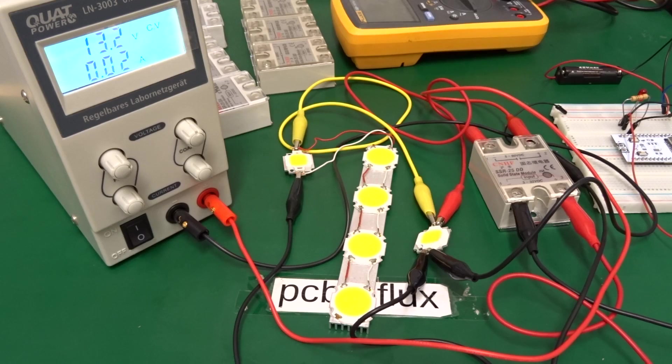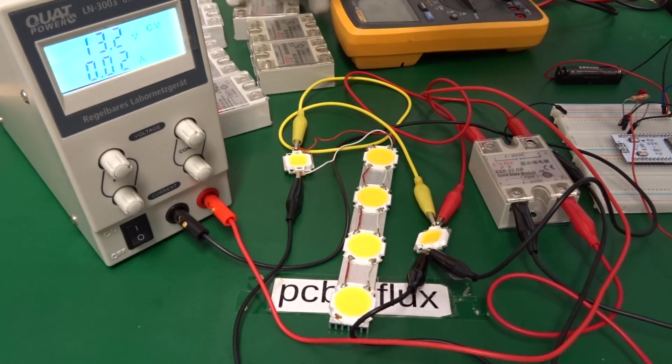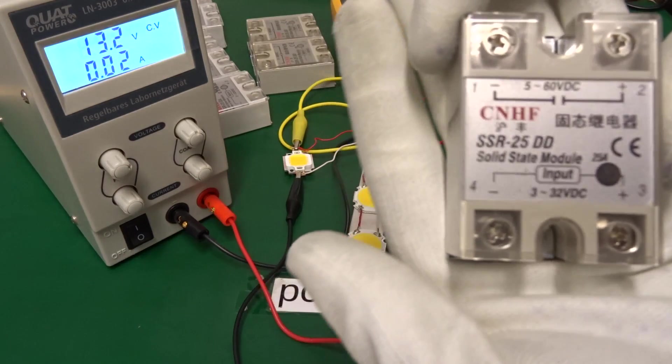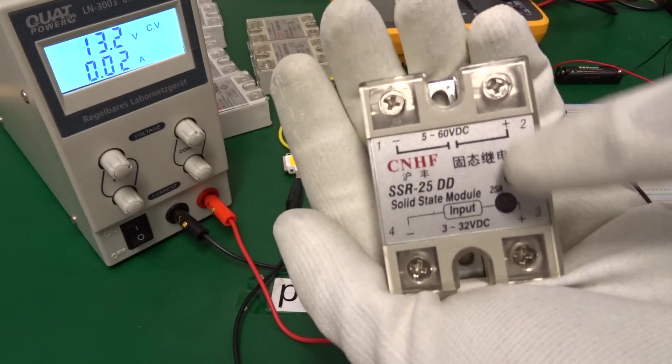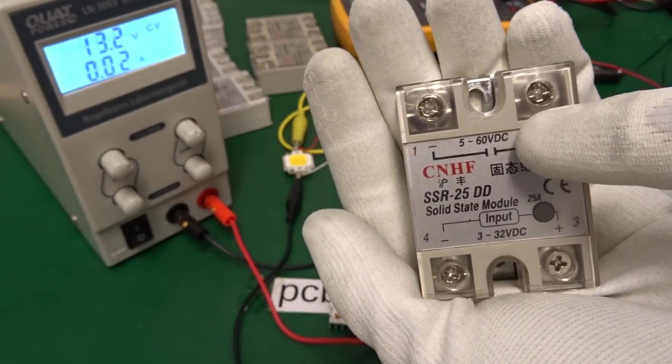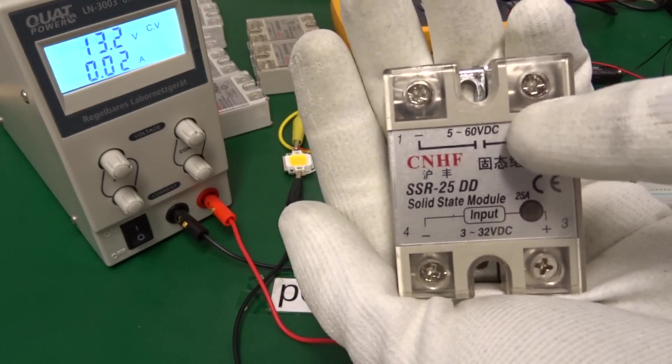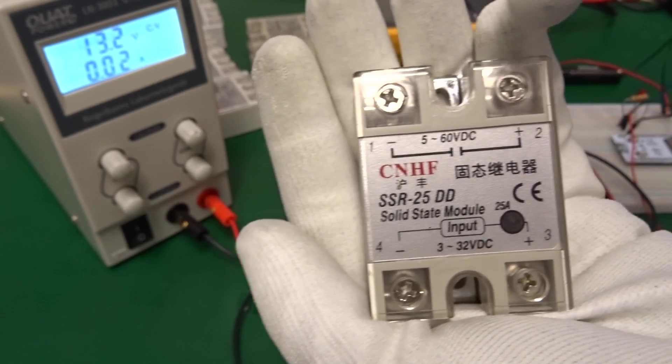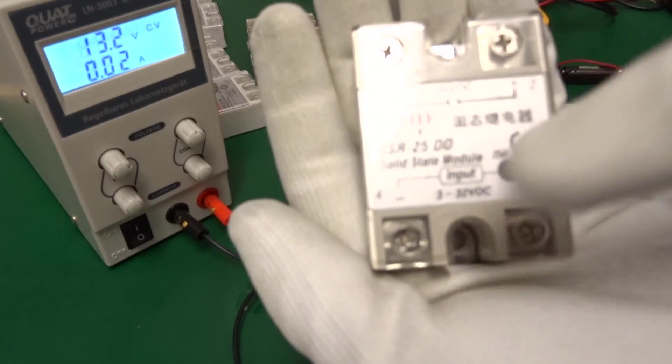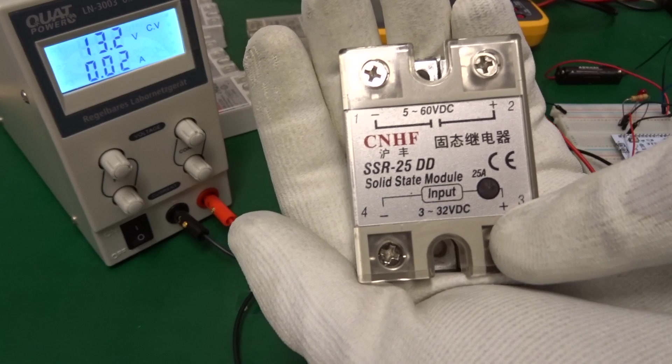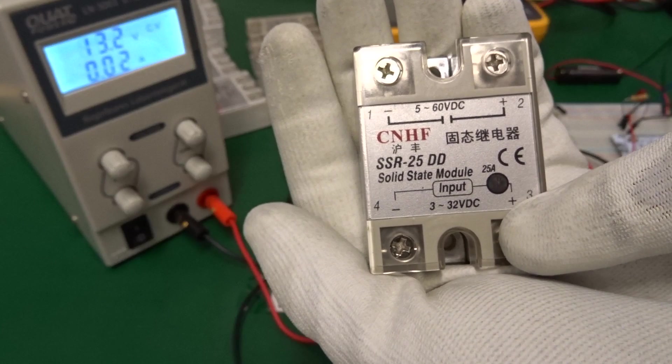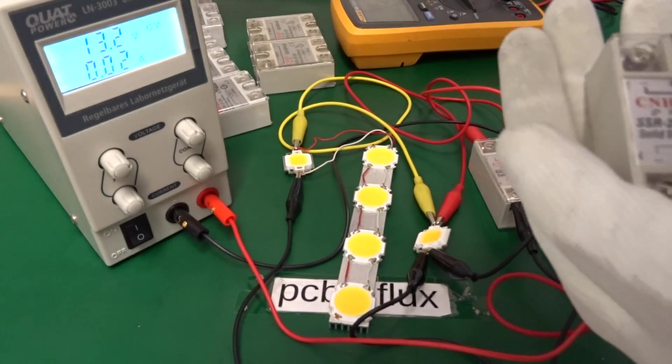Here we see my setup with the solid state relay and the ESP32. We can have a closer look to the solid state relays. This is the DC solid state relay. It's rated for 5 to 60 volt output at 25 amperes. We can use it in an input voltage range from 3 to 32 volts. So we have to be aware that we don't drop below the 3 volts with our ESP32 on the GPIO output.